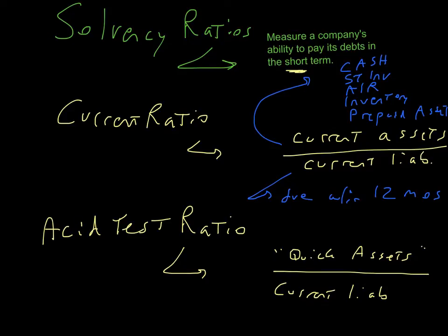Let's take a look now at the acid test ratio. The acid test ratio has the same denominator as the current ratio, but we only include in the numerator what we call quick assets. Well, what are quick assets? Quick assets are those current assets that are very close to becoming cash. We call that liquidity.